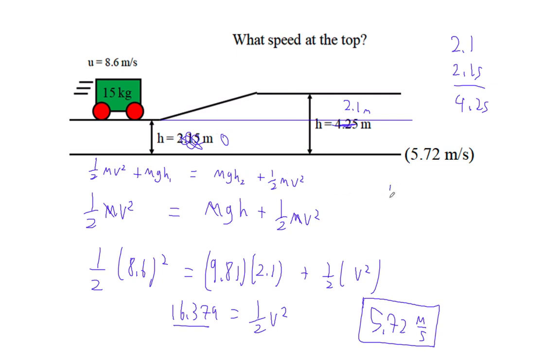And so you'd end up with 1 half mv squared, and then you'd go that equals mg, and then you'd just go h2 minus h1 plus 1 half mv squared.